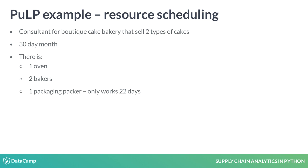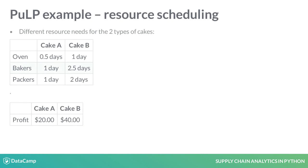Let's jump right into an example that focuses on resource scheduling. Imagine that you are a consultant for a cake bakery that sells only two types of cakes. You are attempting to schedule the resources of the bakery for the next 30 days. There is an oven, two bakers, and a person who packages the cakes. We assume the person packaging will only work 22 of the next 30 days due to vacation. The amount of time needed for each resource is different for each type of cake.